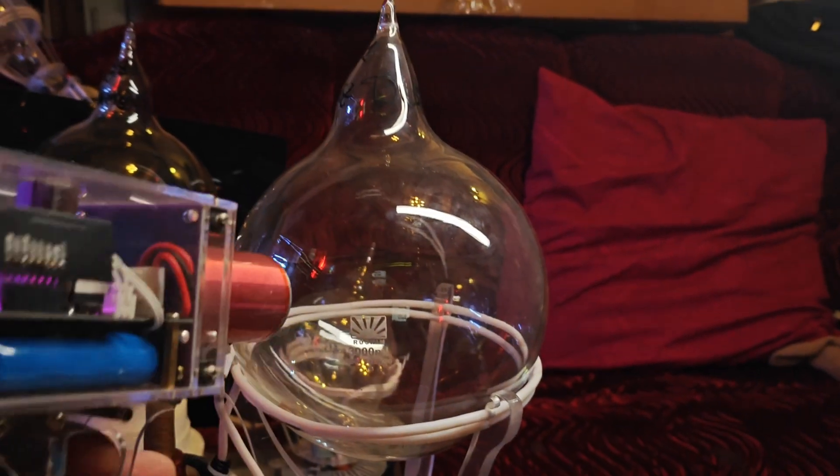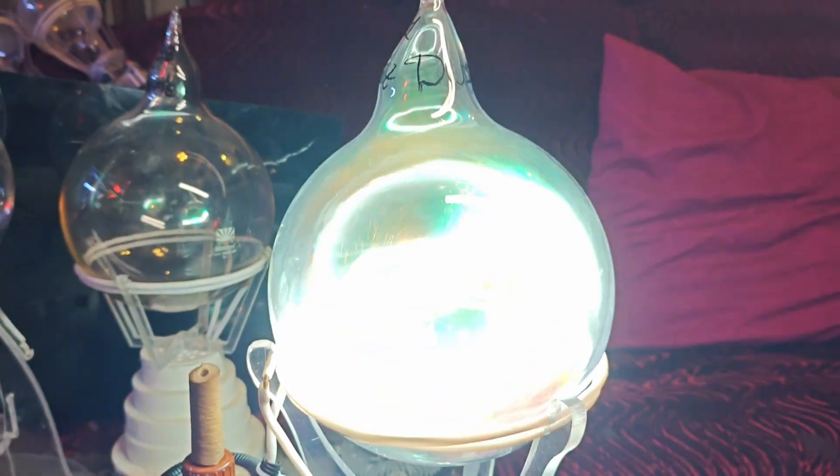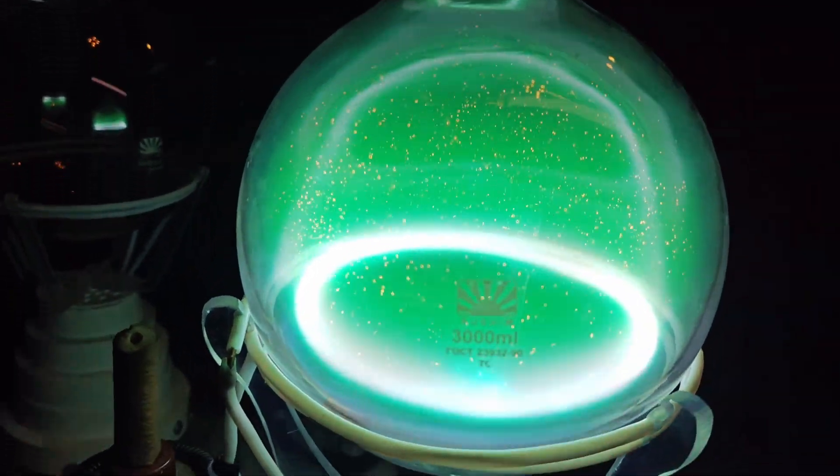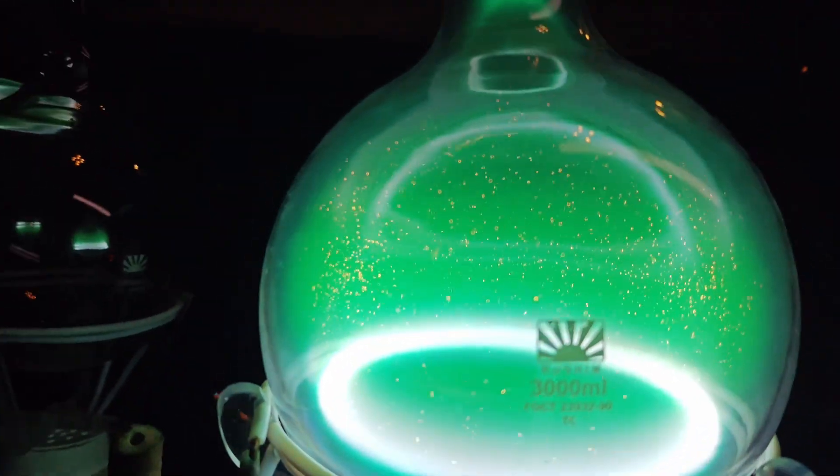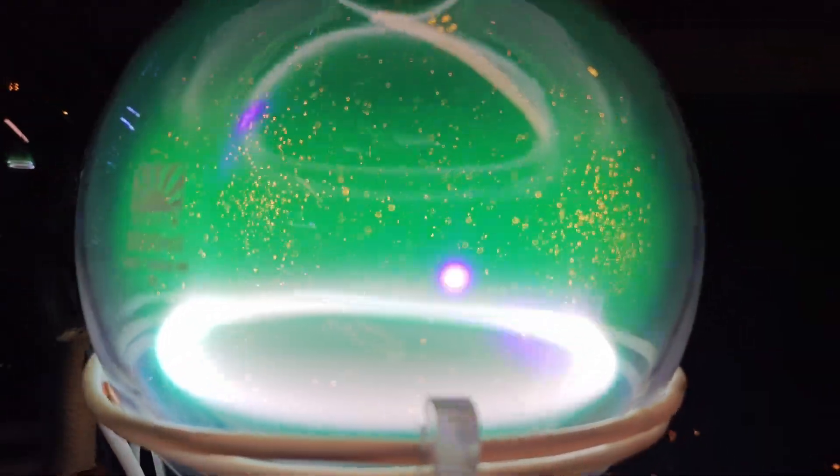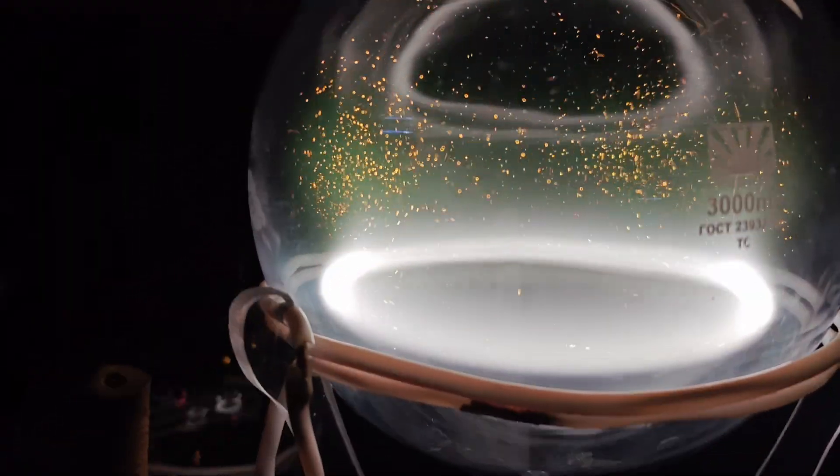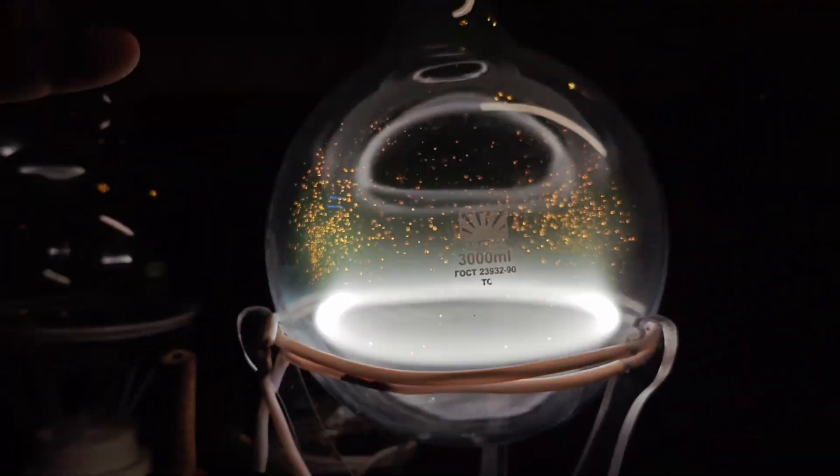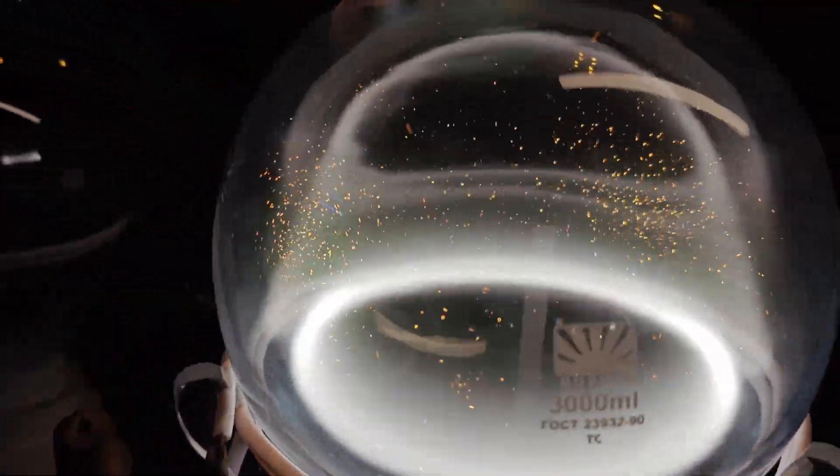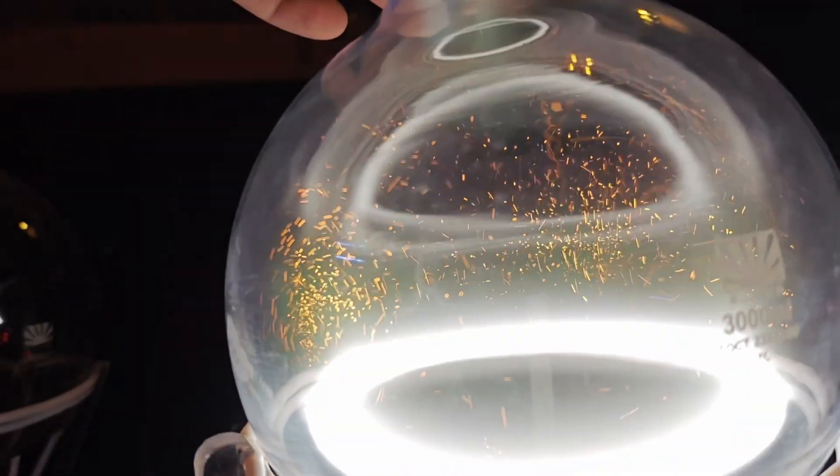We can steer the crystal. Increase the drive frequency and the trap tightens. Lower it and the structure relaxes. Raise the power and the grains levitate higher, reduce it and they settle. Adjusting the pressure changes how often particles collide. Shift the settings and the crystal melts into a snowstorm and freezes back into rings and domes.